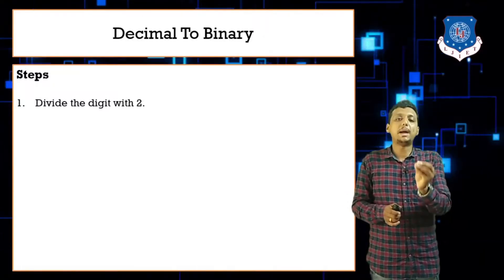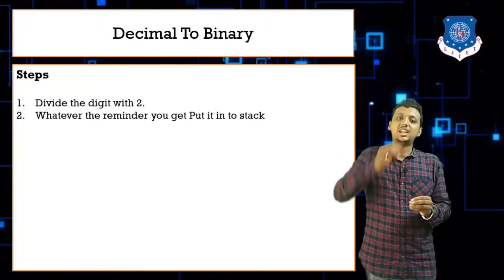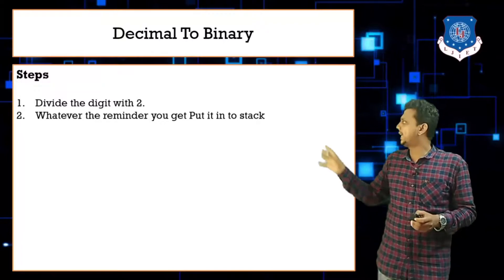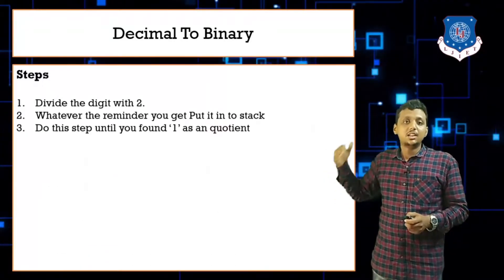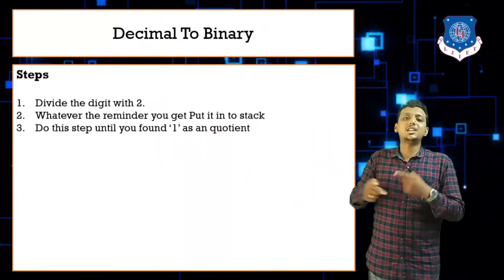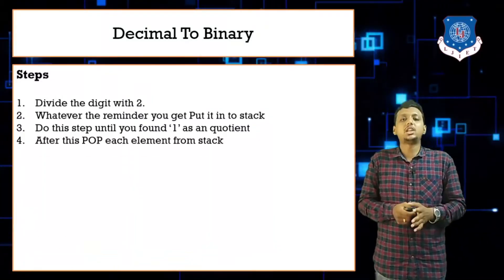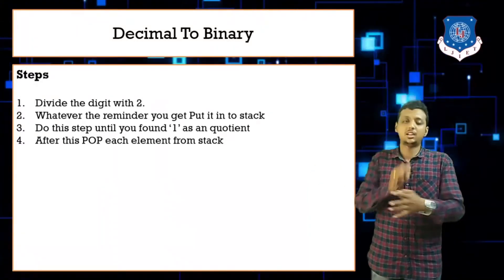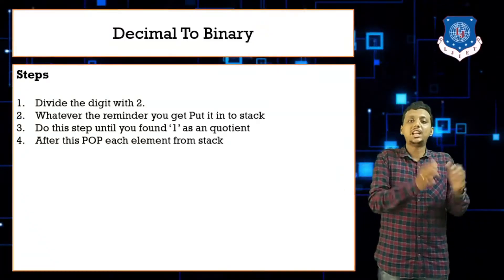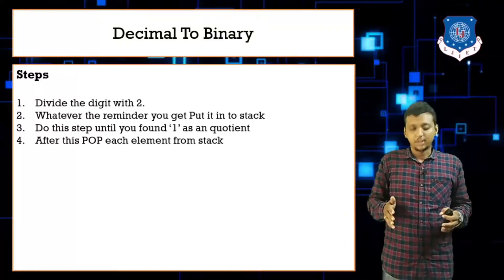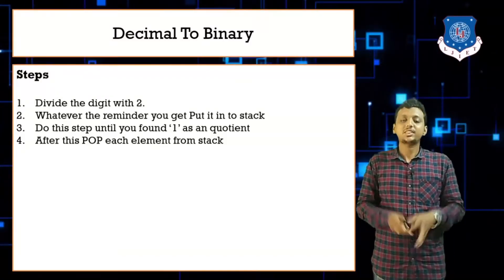The steps are: divide your number by two, take the remainder, and push it inside the stack. Repeat this step until you get one as the quotient. Then pop each and every element from the stack. Whatever answer you get after popping all the elements — merge them together and that becomes the final binary answer.